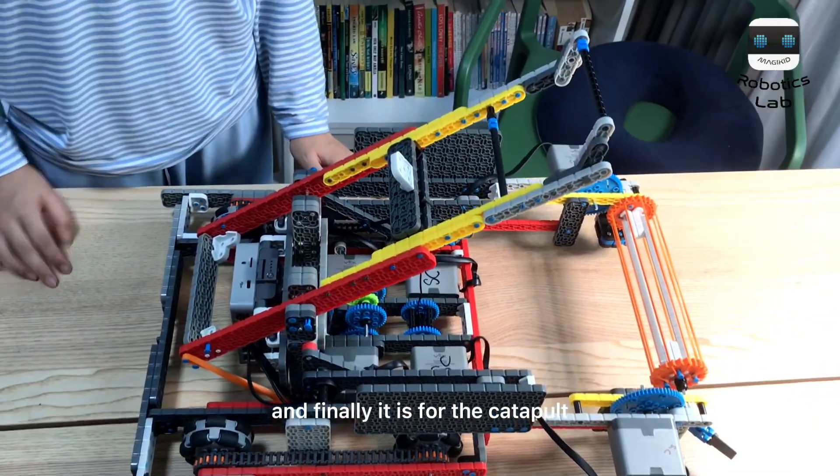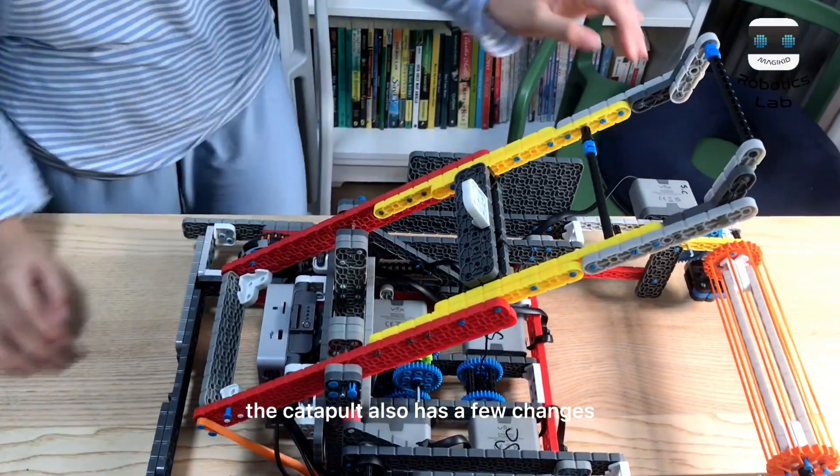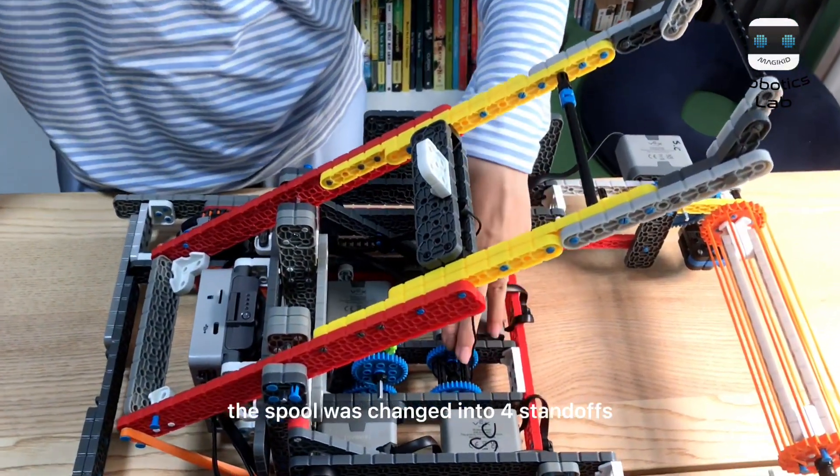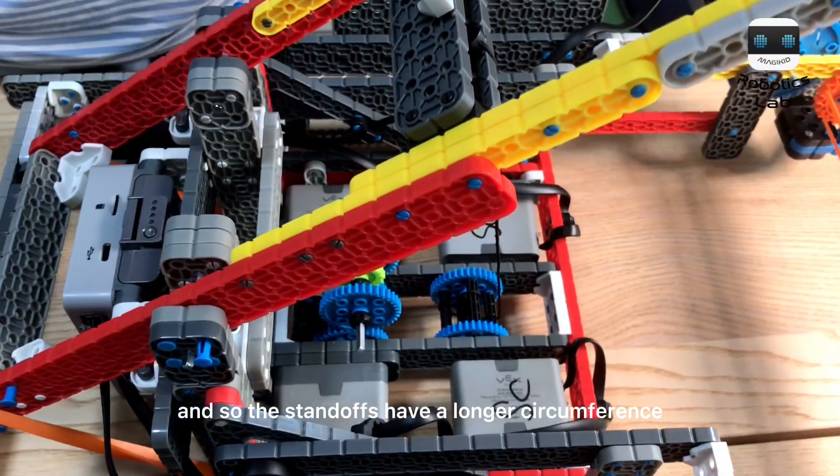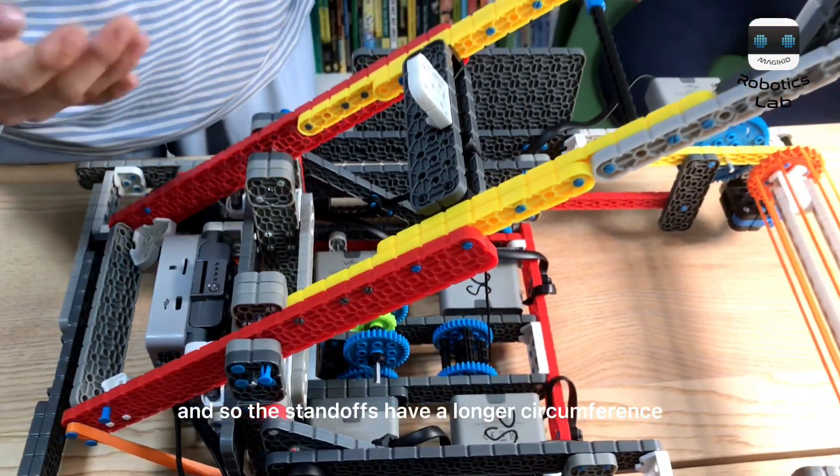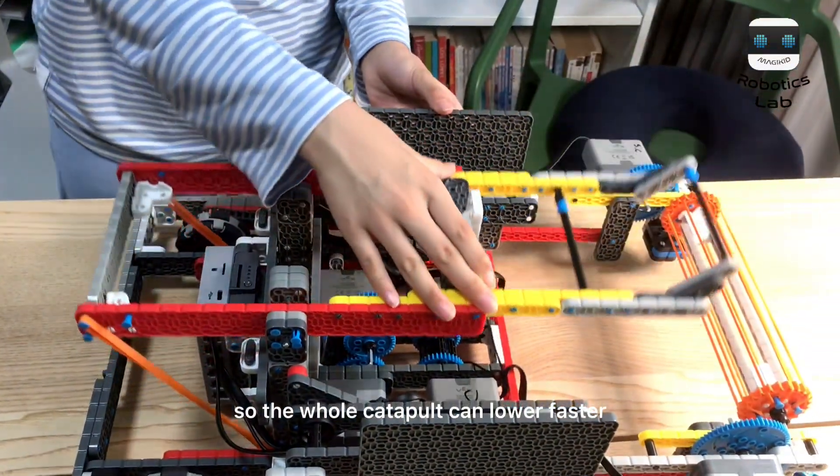And finally, it is for the catapult. The catapult also has a few changes. For example, here, the spool was changed into four standoffs, and so the standoffs have a longer circumference, so the whole catapult can lower faster.